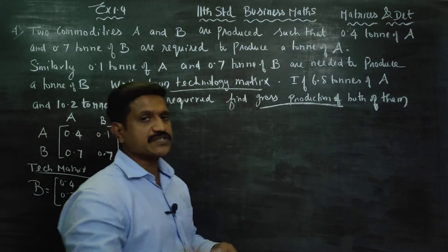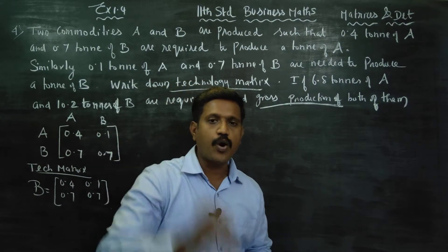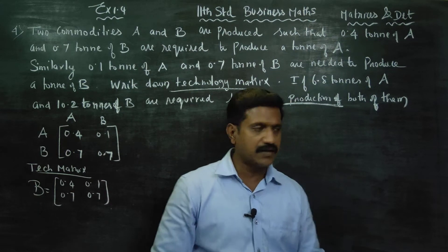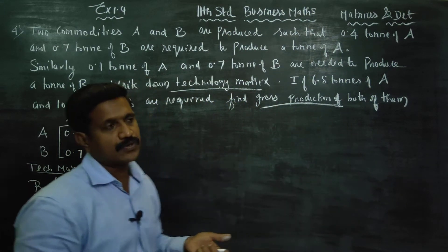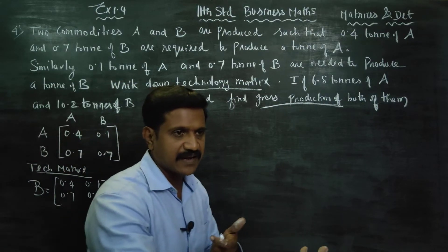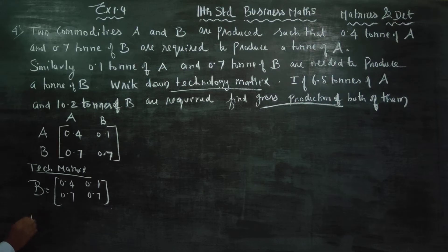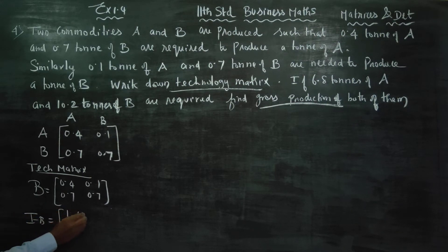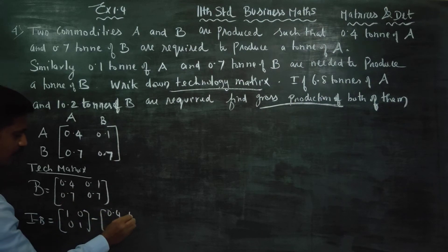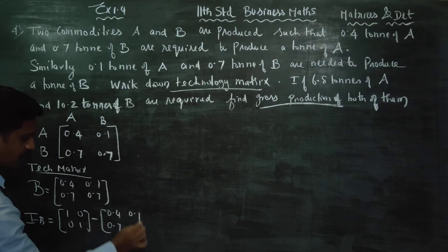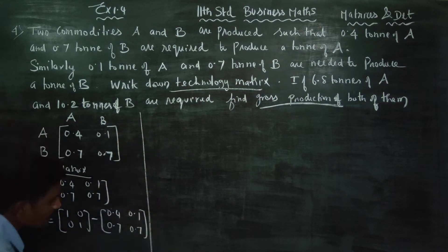The unit matrix I is: 1, 0, 0, 1. To find I minus B, we write the unit matrix 1, 0, 0, 1 minus the B matrix: 0.4, 0.1, 0.7, 0.7.